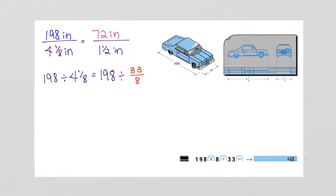So we're dividing by 33 eighths. To divide fractions, we actually multiply. This is the same thing as 198 multiplied by 8 over 33. When you multiply fractions, you just multiply straight across. So 198 times 8 is 1584, 1 times 33 is 33. Divide and we get 48.